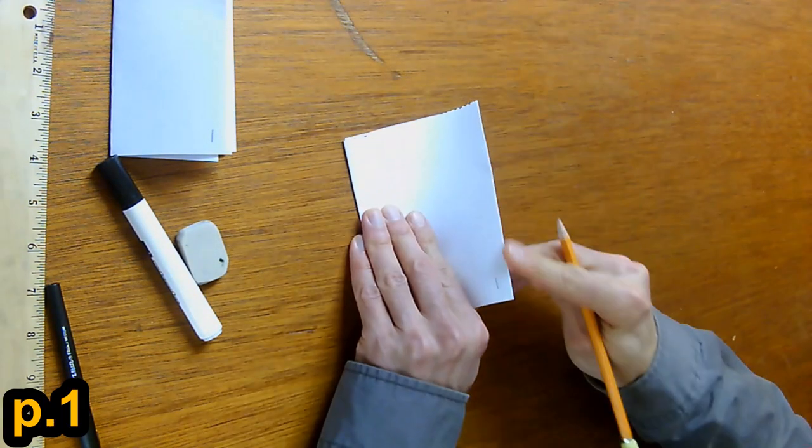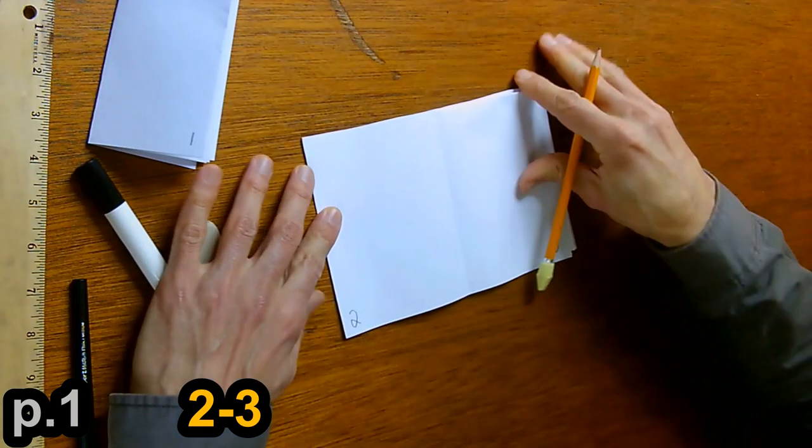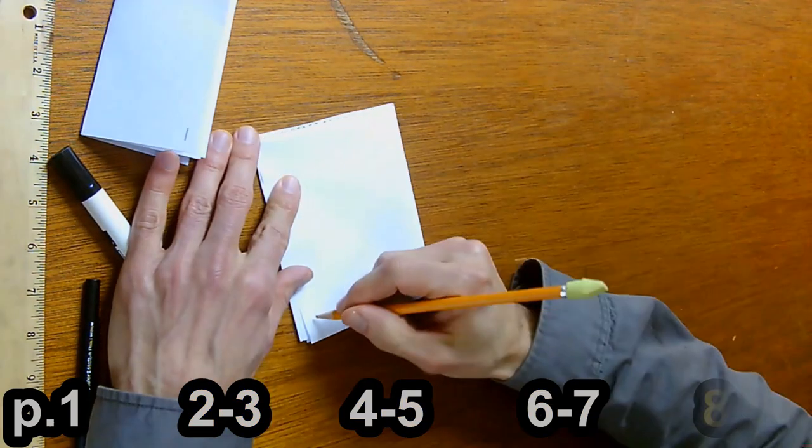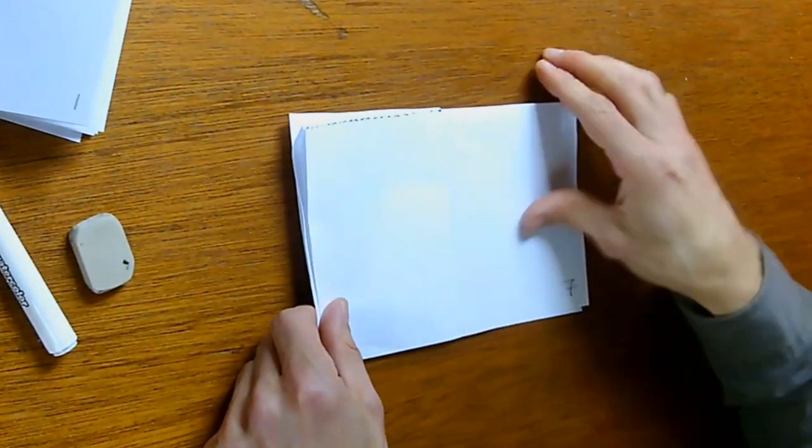Numbering pages is the same. Page one is the front cover. Page two and three are the beginning. Page four and five are the middle. Page six and seven are the ends. And page eight is the back cover. There's our eight page book, blank and ready to draw.